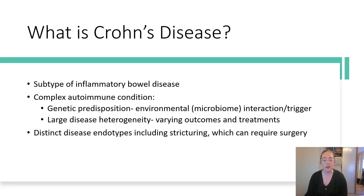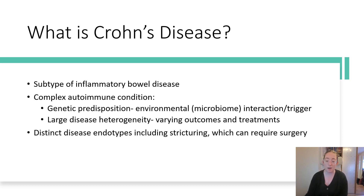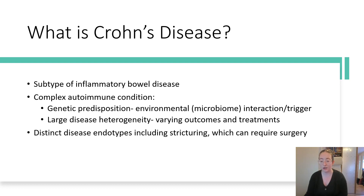So firstly, what is Crohn's disease? It's a subtype of the complex autoimmune condition inflammatory bowel disease, and both genetics and environmental factors can contribute to its development. Because of the complex nature of this disease, predicting a patient's disease course can be challenging. Additionally, Crohn's disease has specific endotypes associated with it, such as the stricturing endotype, which involves the narrowing of a section of the gastrointestinal tract, and this can sometimes require surgery.